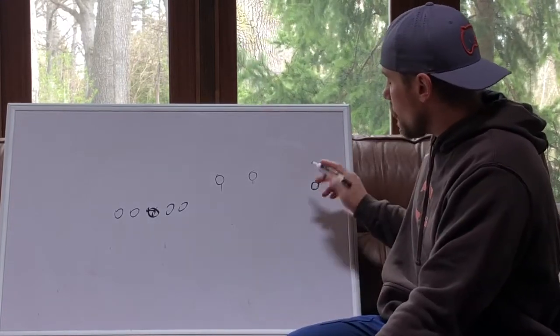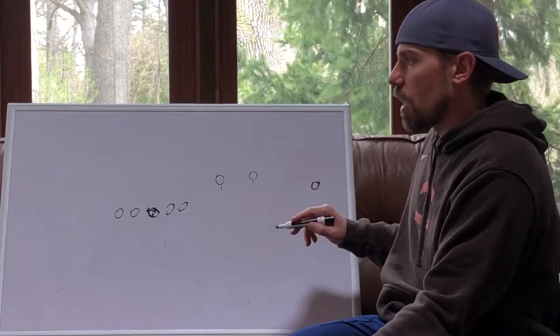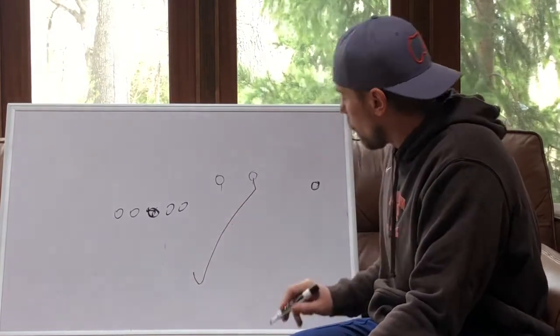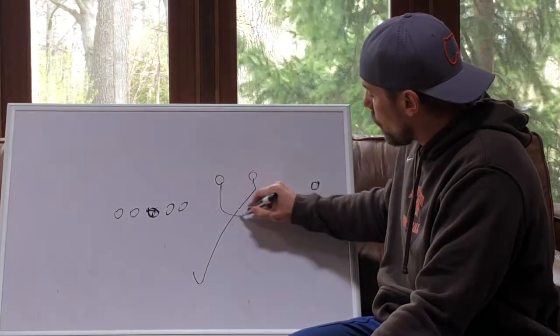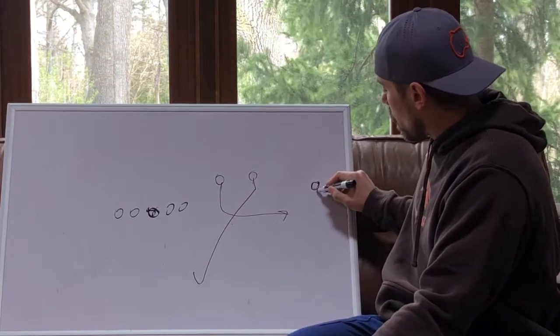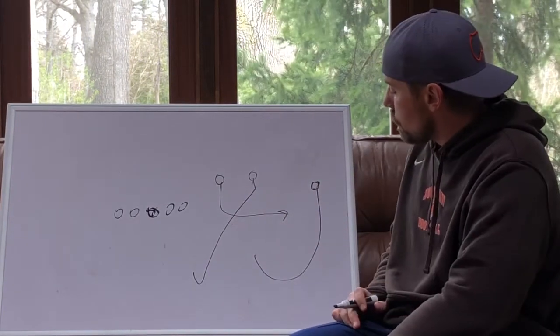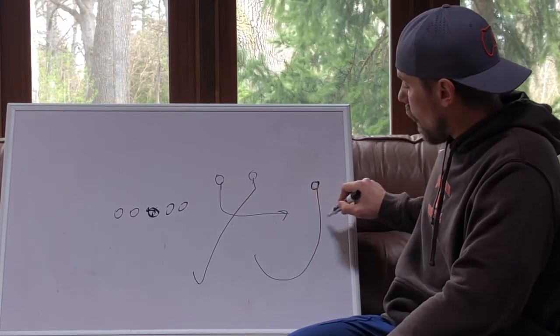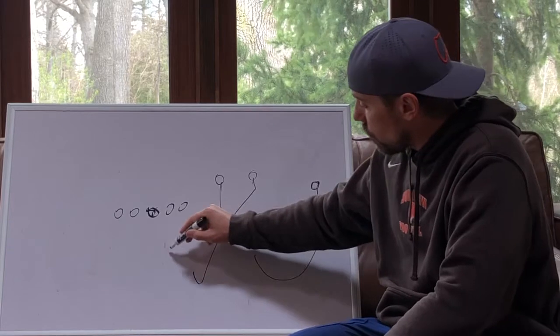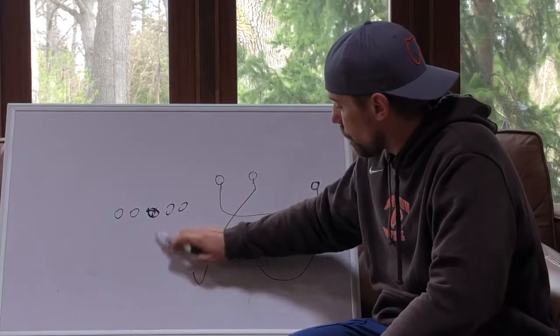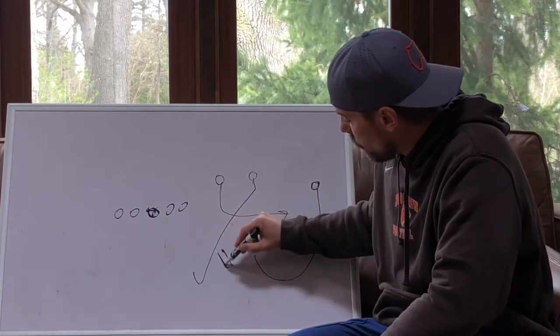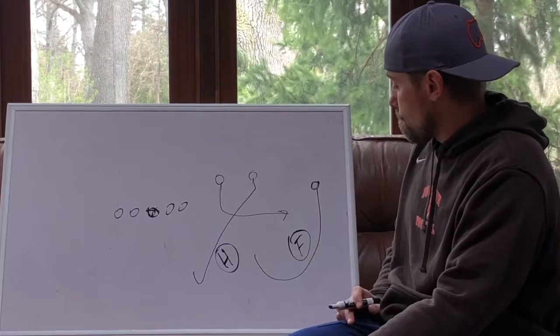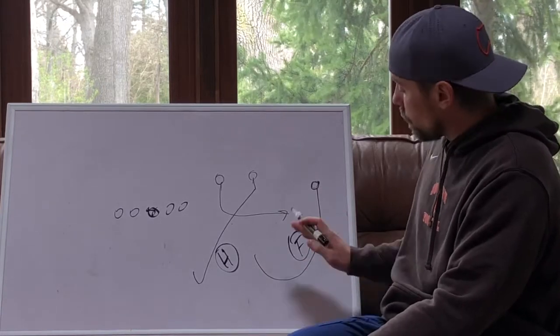Now something we could do, like a curl-out-snag concept here. So we get a snag route here off a slant stem, an out, and a curl. So you can see the layers right now. This flat player is stretched to the out and the curl, and the hook player is stretched between. I've got my hook player sitting in here and my flat player sitting on here. Poses the problems. This would be horizontally layering the defense.